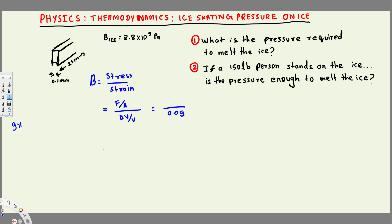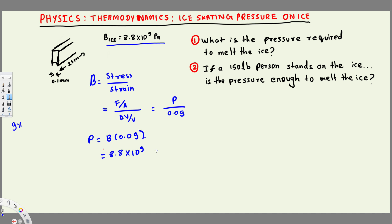F over A is what we are trying to find — let's call it P. This pressure is what's required to find the melting point. The bulk modulus is already provided, so we can rearrange this equation: P is equal to bulk modulus times 0.09. We have the bulk modulus already — that's 8.8 times 10 to the power of 9 Pascal — so this is going to be 8.8 times 10 to the power of 9 Pascal times 0.09.